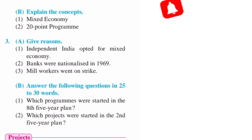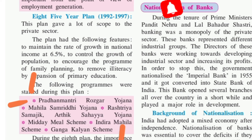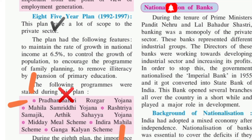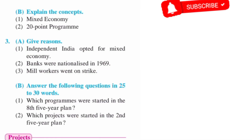Next question B: answer the following questions in 25 to 30 words. First one — 'Which programs were started in the 8th Five Year Plan?' The answer is on page number 18. Write: 'The following programs were started during the 8th Five Year Plan' — replace 'this plan' with '8th Five Year Plan.' Then write everything below: Pradhan Mantri Rozgar Yojana, Ganga Kalyan Scheme — write the full list up to Ganga Kalyan Scheme.